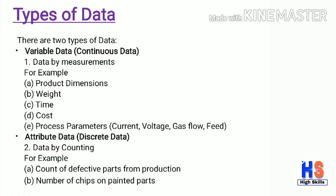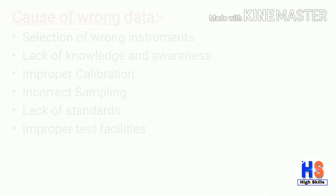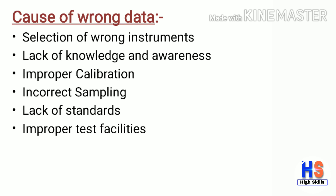Let's move to types of data. There are two types of data used in SPC. The first is variable data, also known as continuous data, and the second is attribute data, also known as discrete data. Variable data is data by measurement — for example, product dimensions, weight, time, cost, and product parameters such as current, voltage, gas flow, and feed. Attribute data is data by counting — for example, count of defective parts from production or number of chips on a painted part.